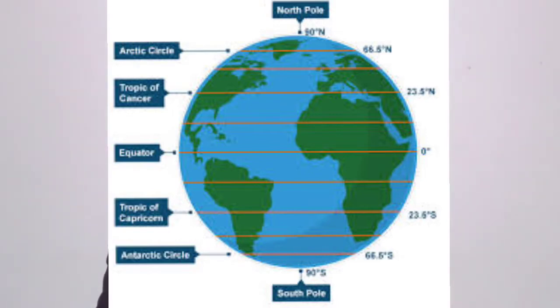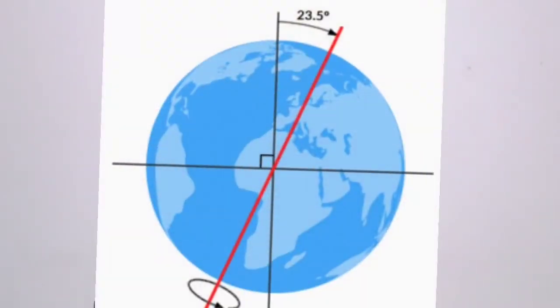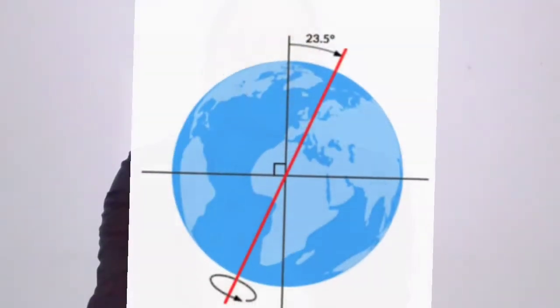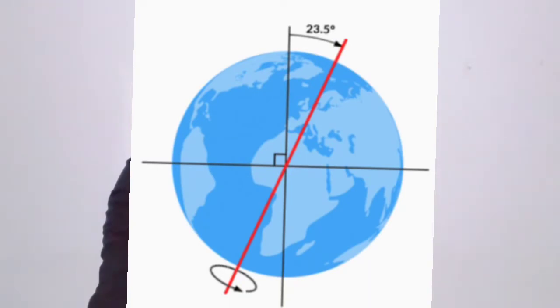On the Arctic Circle and Antarctic Circle, daytime lasts for 24 hours. On the North Pole and South Pole, the sun appears in the sky for more than 6 months based on the season. These important parallels arise because of the inclination of Earth's axis by 23 degree 30 minutes.